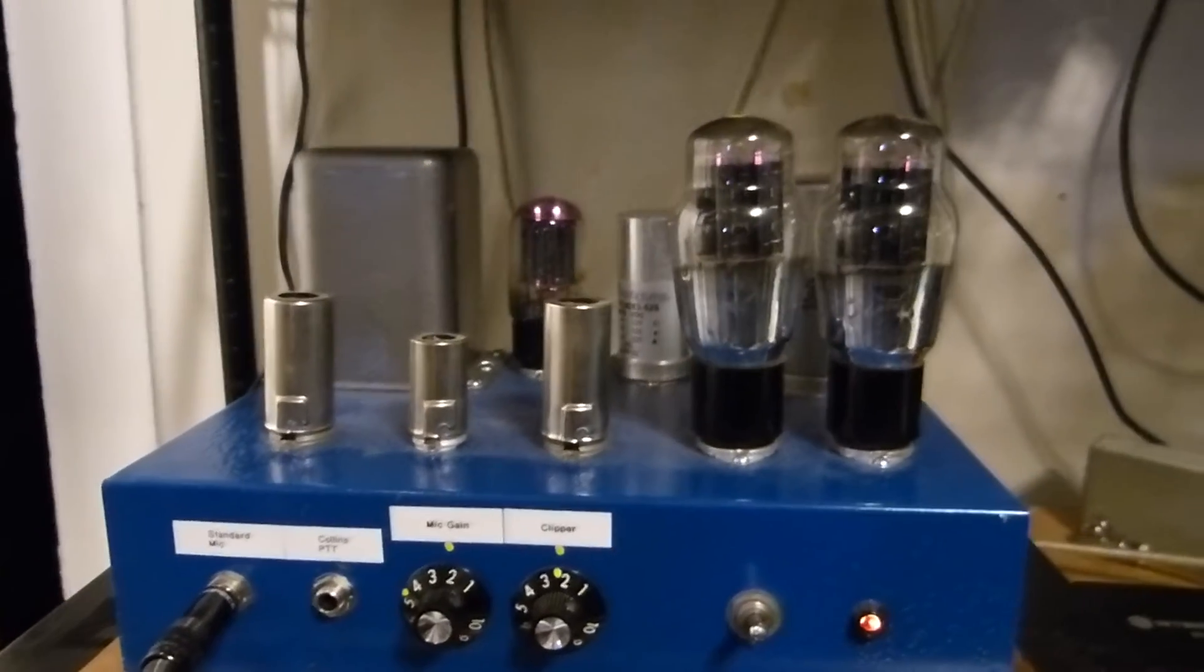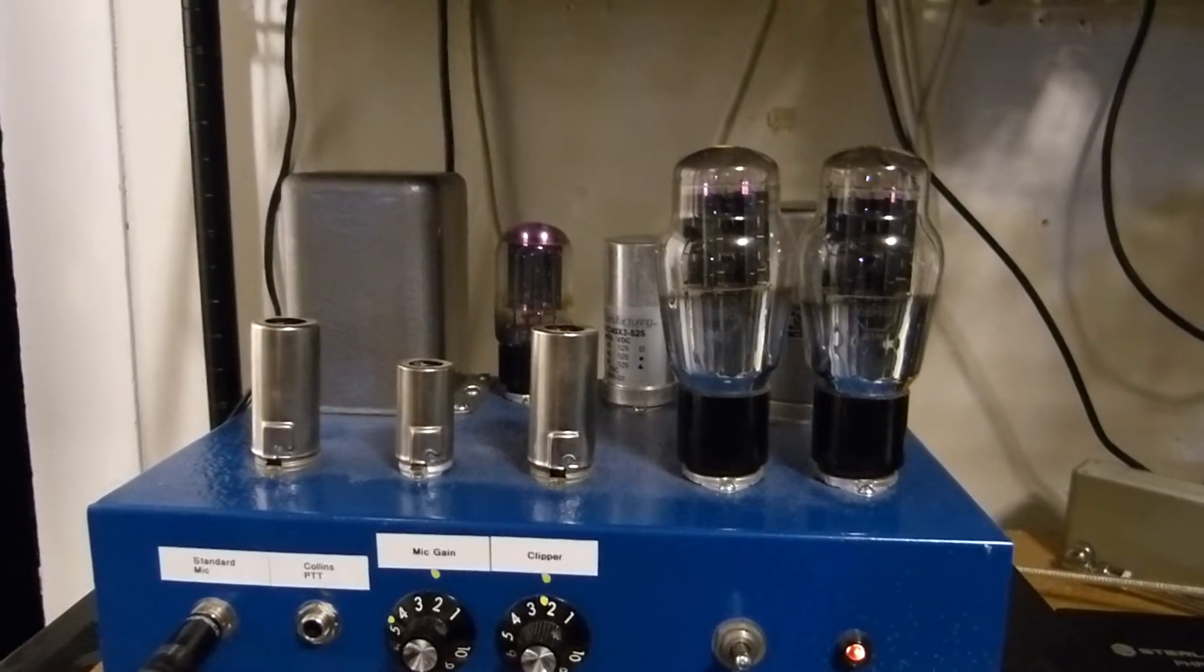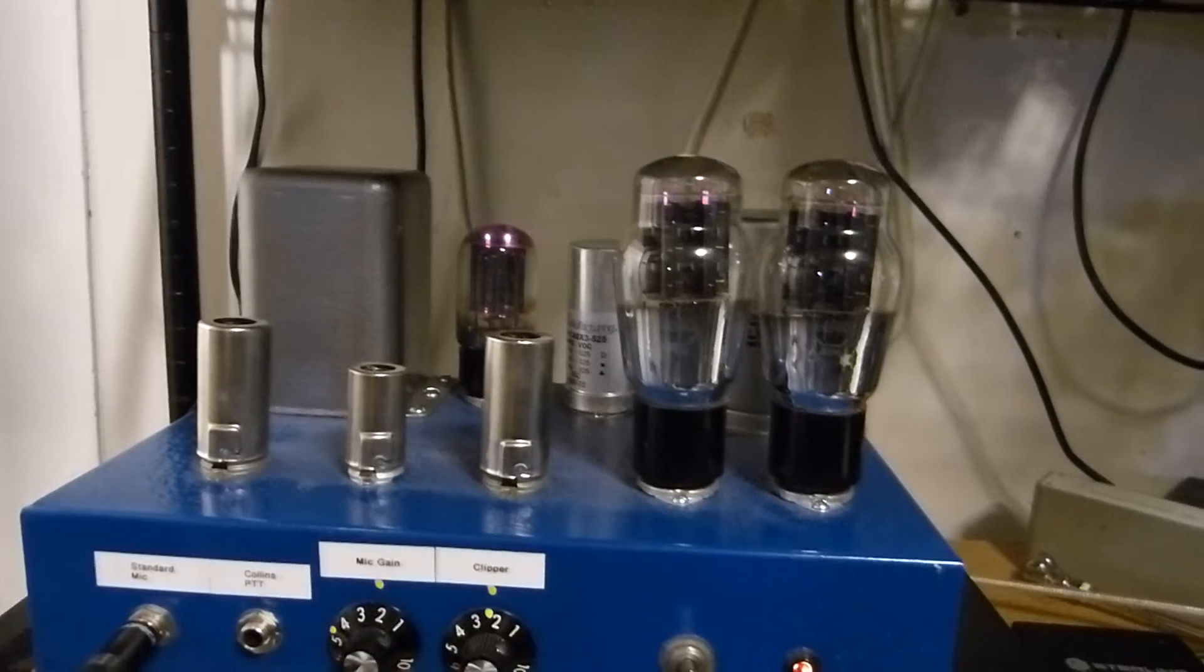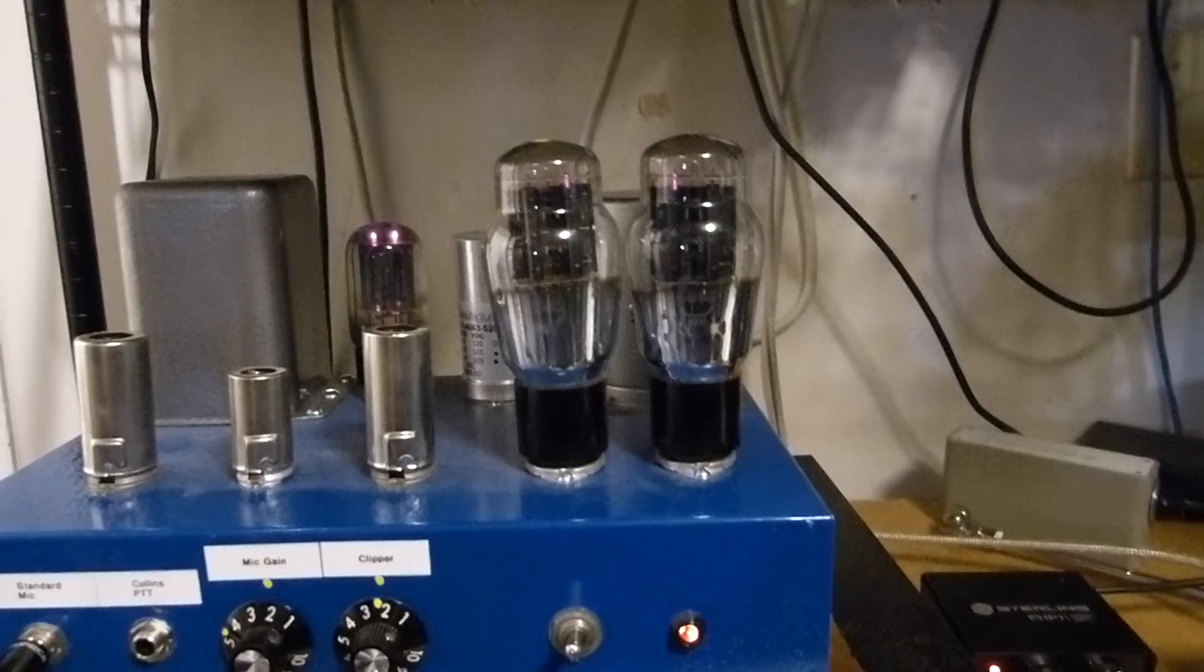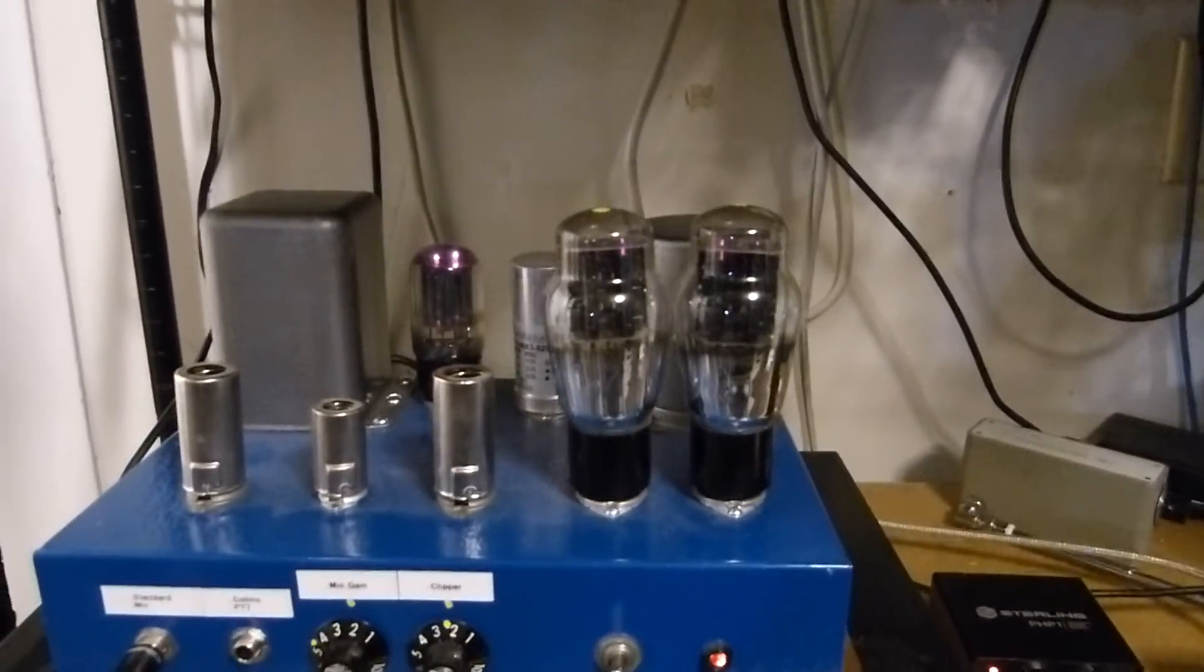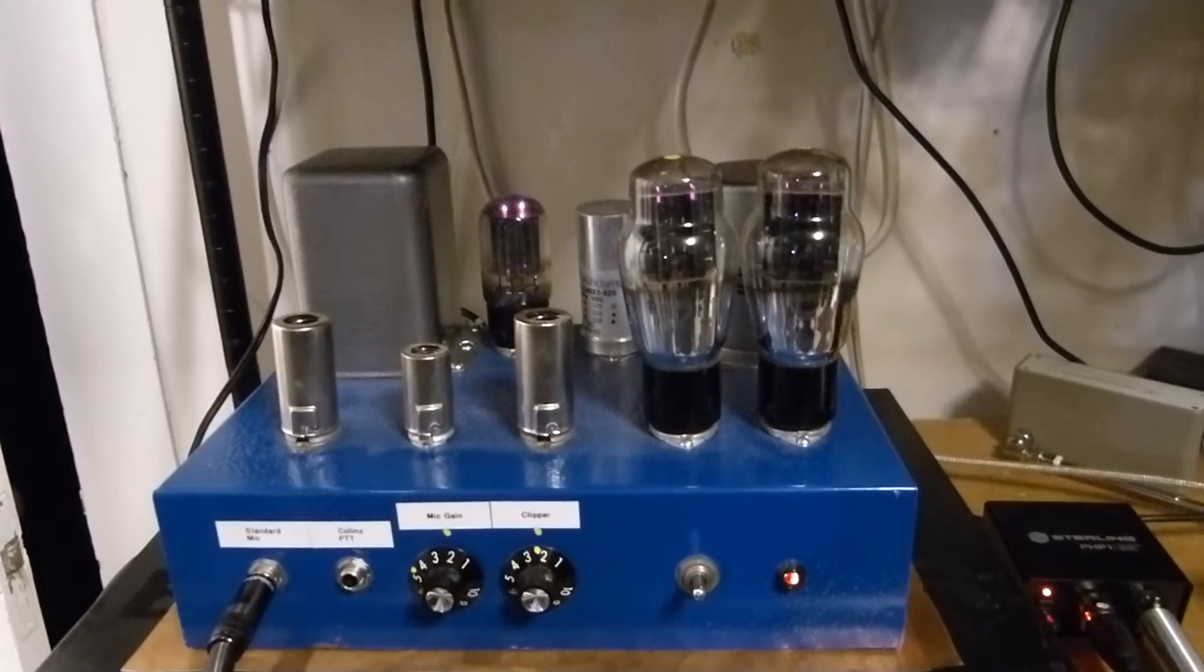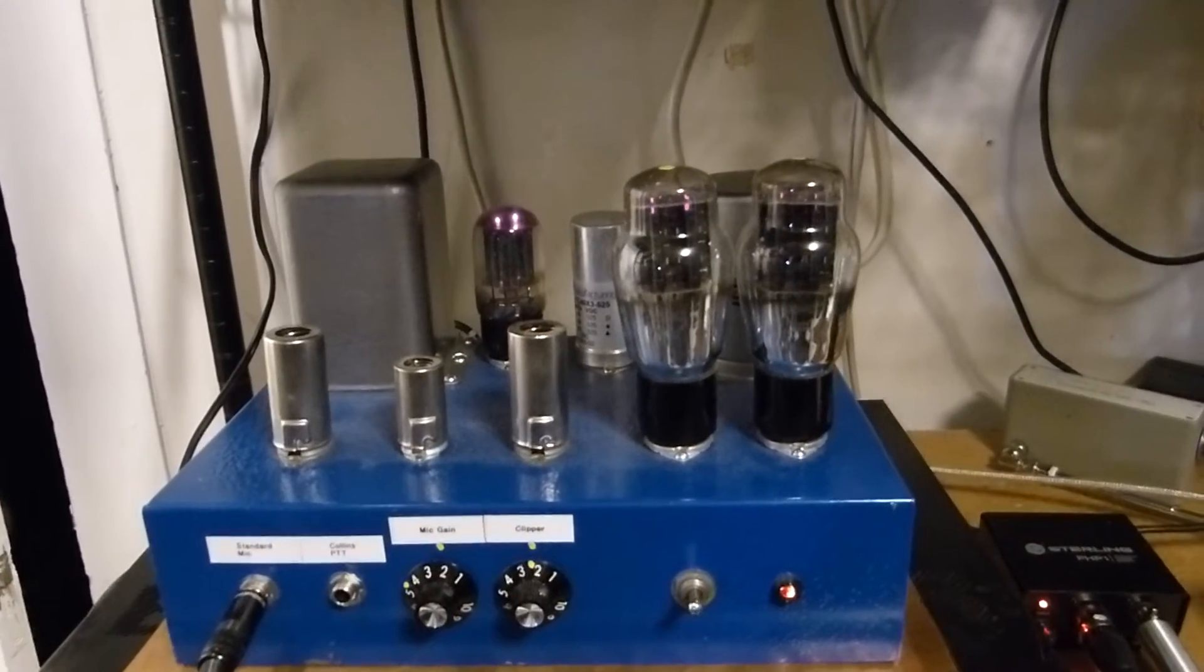It's interesting in the viewing screen of the camera that the tubes look purple - they're actually orange. These are a couple of 6B4Gs, original, probably from the 1950s. I've made this comment before - I sent them actually to my friend over in Poland.